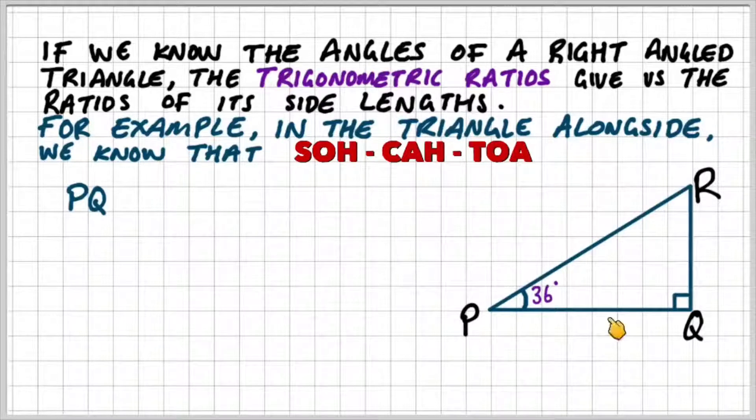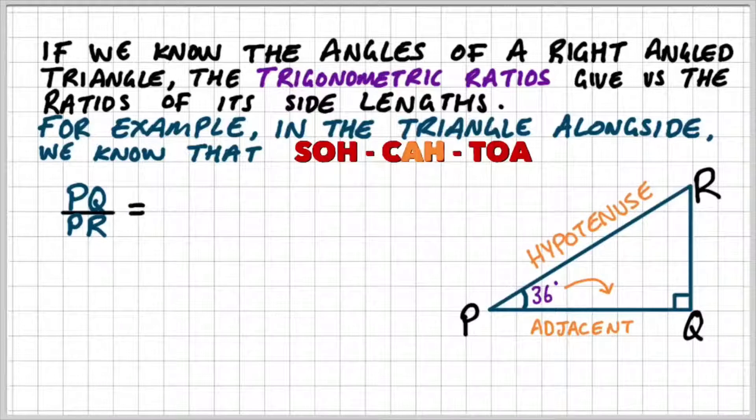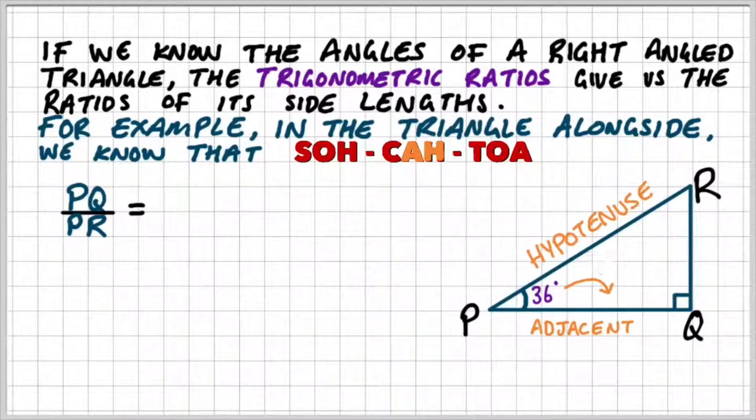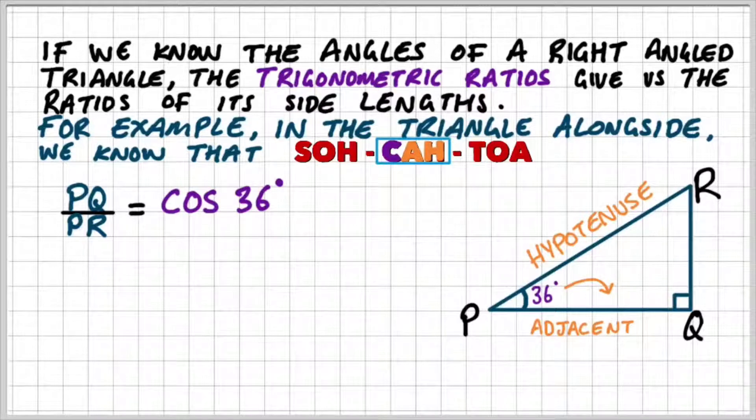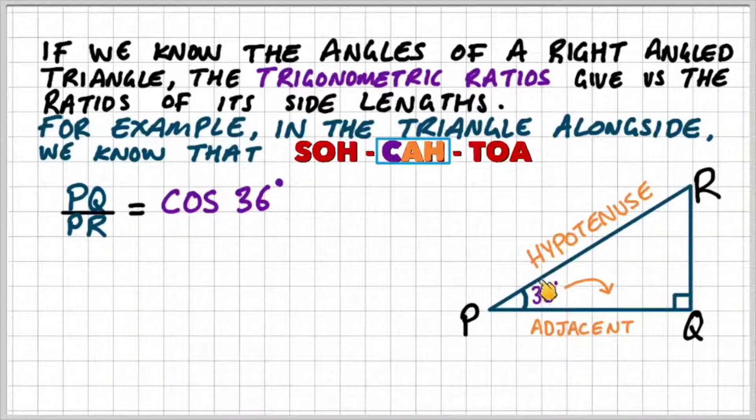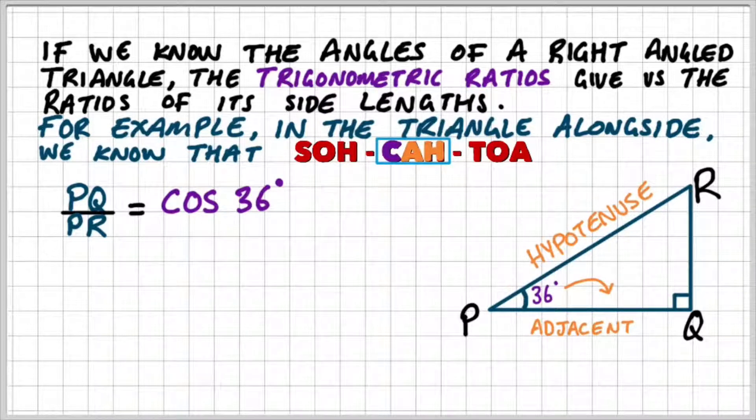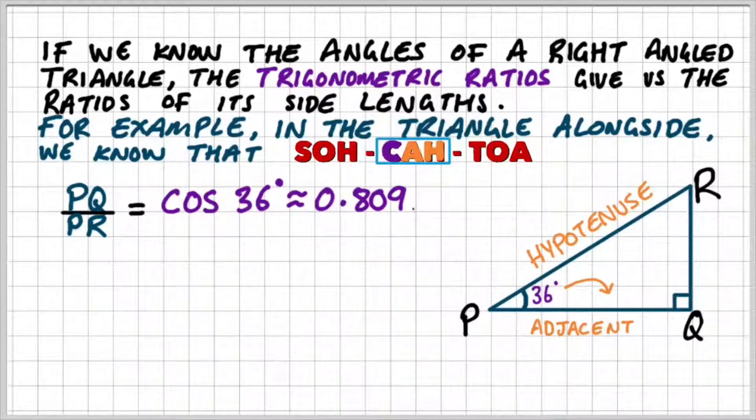I can use the acronym SOH-CAH-TOA to set up one of the trig ratios. So if I start with PQ, PQ is the adjacent in this case, and PR would be the hypotenuse. So the adjacent divided by the hypotenuse is connected using the cosine ratio. So cosine 36 on your calculator will give you approximately 0.809.